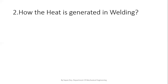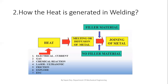I'm going to show you a block diagram picture. In this picture, we can see the sources used to generate heat: electrical current, gas, chemical reaction, laser or ultrasound, friction, explosive, and others. These are the main points — the procedures to generate heat.